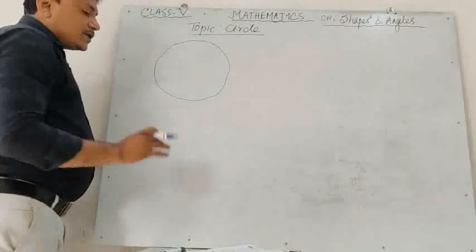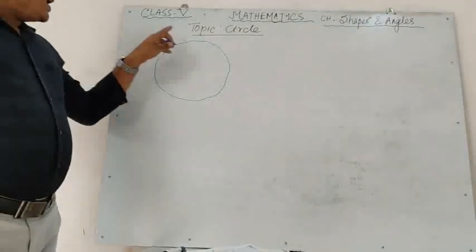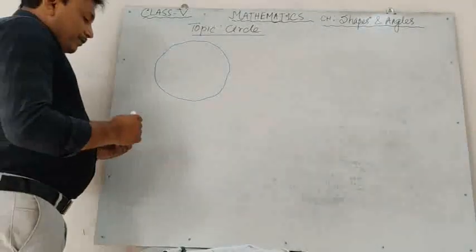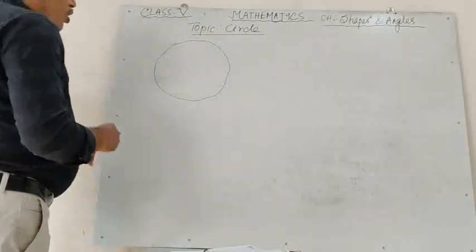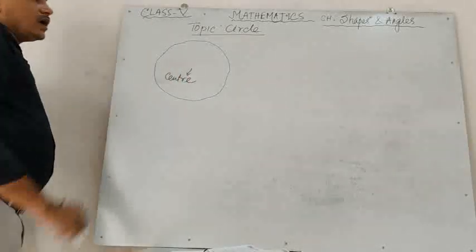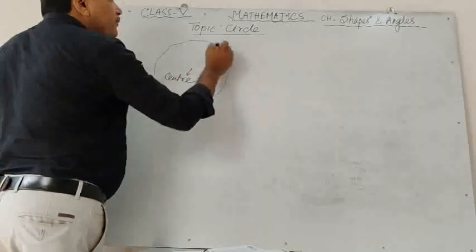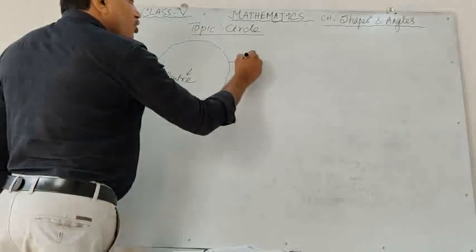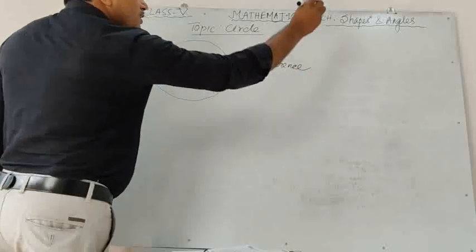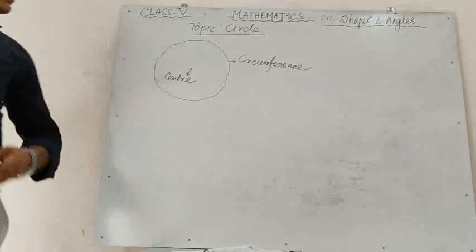A circle is a collection or set of points in a plane that are equidistant from a given point. The fixed point on the plane is called the center of the circle, and the total curved line is called the circumference of the circle.